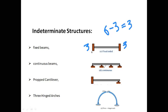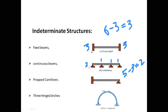For a continuous beam with a hinge at one end and rollers at the other supports: the hinge gives two reactions, and each roller gives one. Total internal reactions equal five. Five minus three equilibrium conditions equals two, so this beam is indeterminate to a degree of two. For a propped cantilever beam, total reactions equal four. Four minus three equals one, so it is indeterminate to a degree of one.